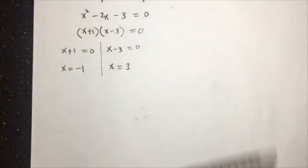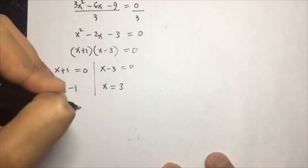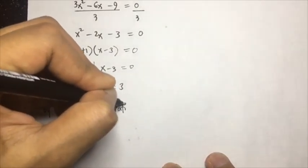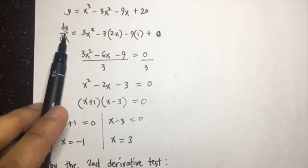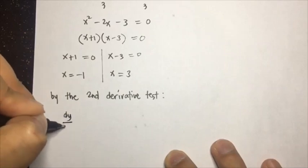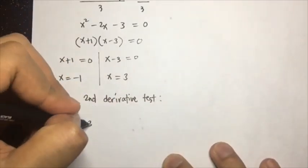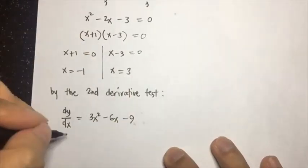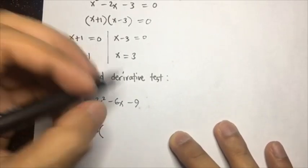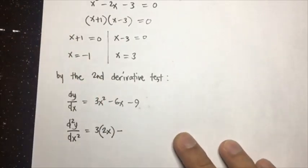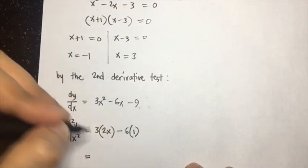To determine if each point is a maximum or minimum, we perform the second derivative test. Our first derivative is dy/dx = 3x² - 6x - 9. Getting its second derivative: d²y/dx² = 6x - 6.